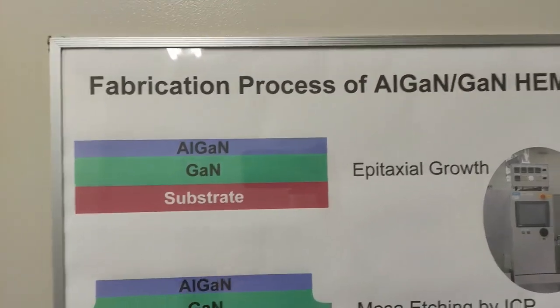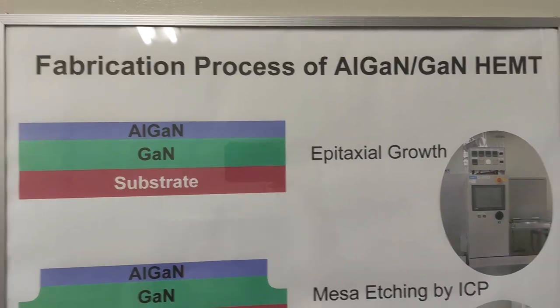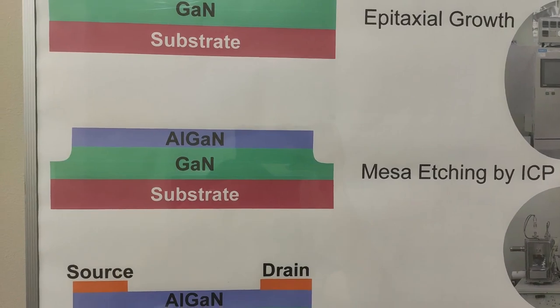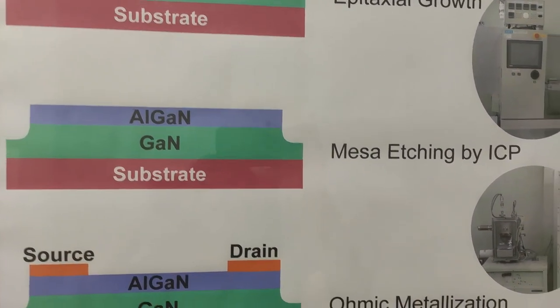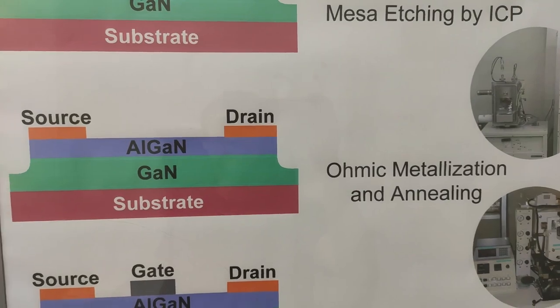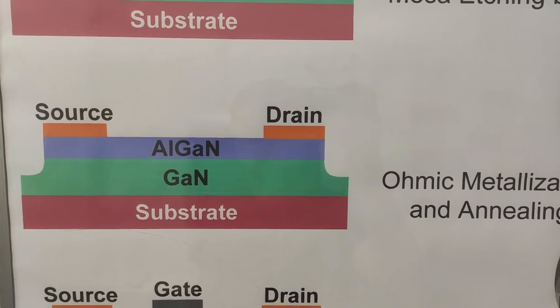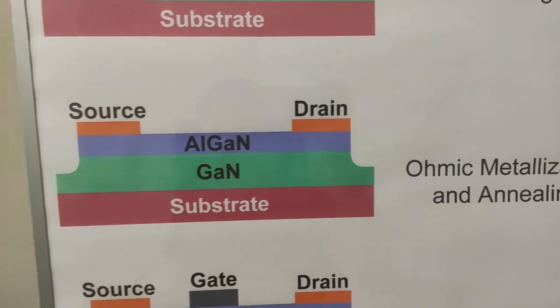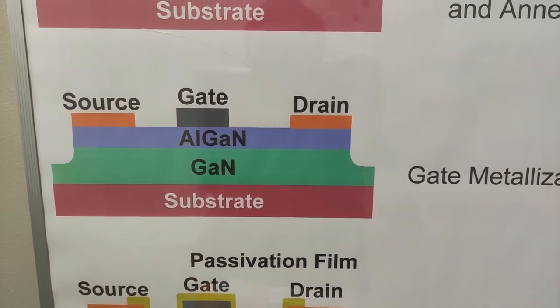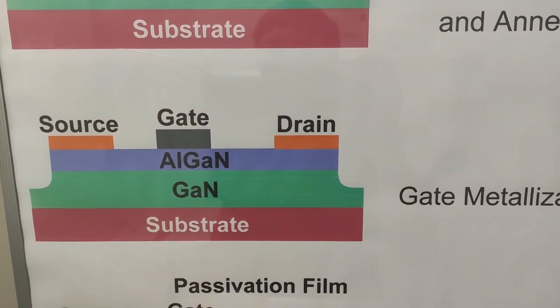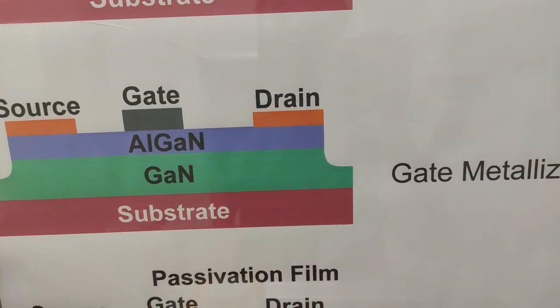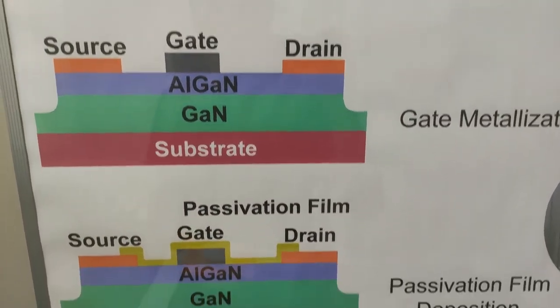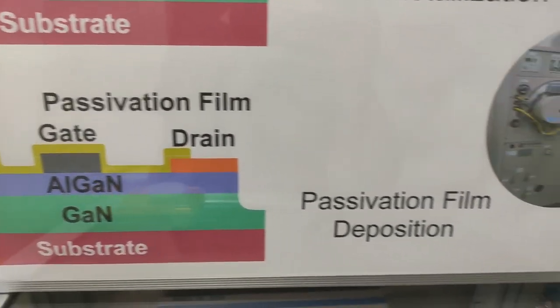So to start it simple, you just grow your own wafers, then you etch it by ICP to break the AlGaN layer, so the devices are not connected to each other. Then you add source and drain by atomic metallization, usually titanium, aluminum, and gold. Then you just bake it, like 800 something degrees for a few seconds. Then you add the gate, or you add the insulation layer between the gate and AlGaN, which is also a possibility. Then you just passivate everything and your device is basically ready.